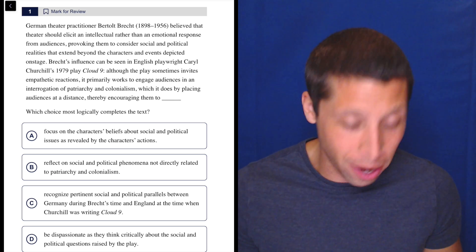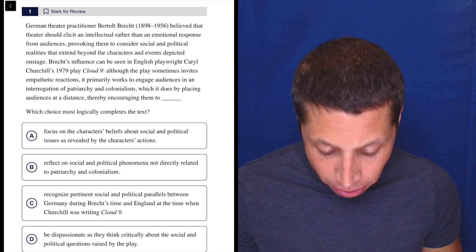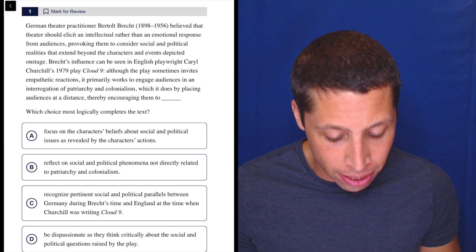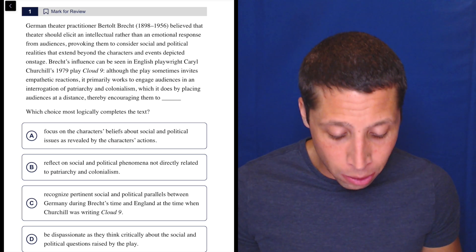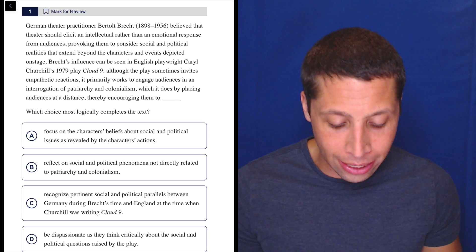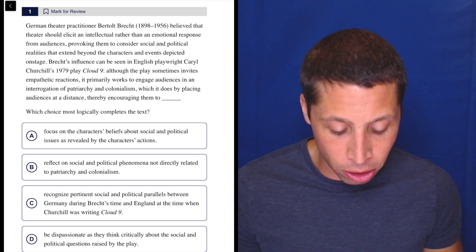That's a mouthful. Let's not worry about that later. Brecht's influence can be seen in English playwright Carol Churchill's 1979 play Cloud Nine. Although the play sometimes invites empathetic reactions, it primarily works to engage audiences in interrogation of patriarchy and colonialism, which it does by placing audiences at a distance, thereby encouraging them to...